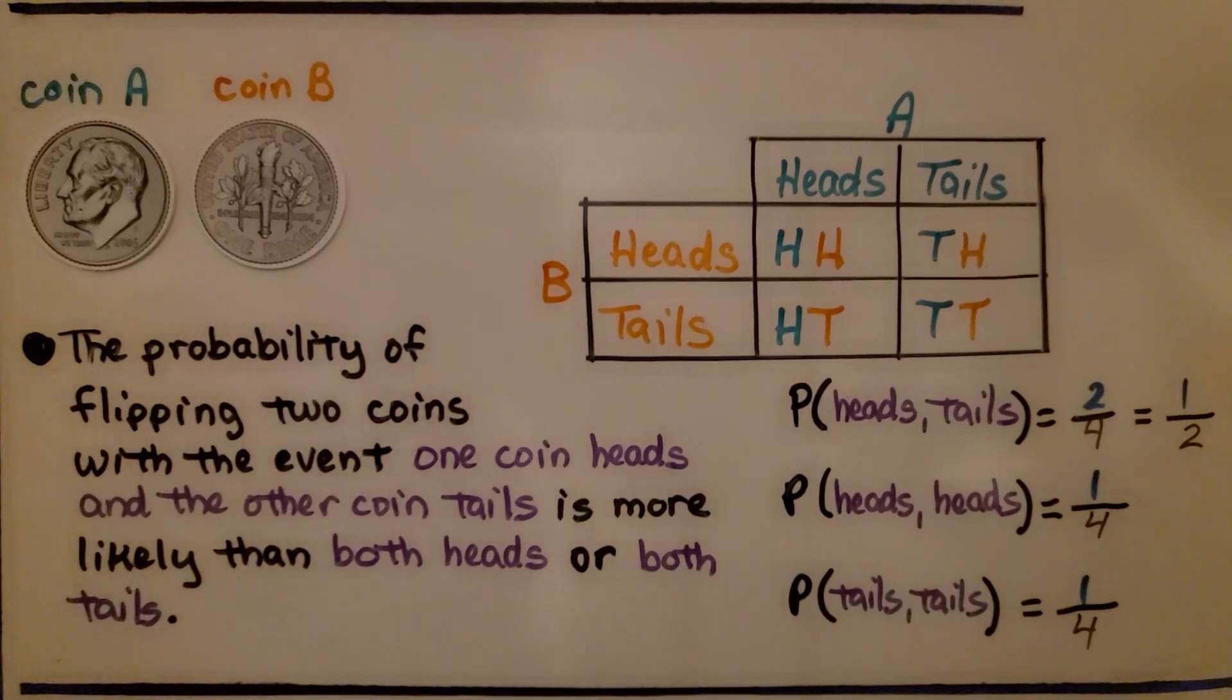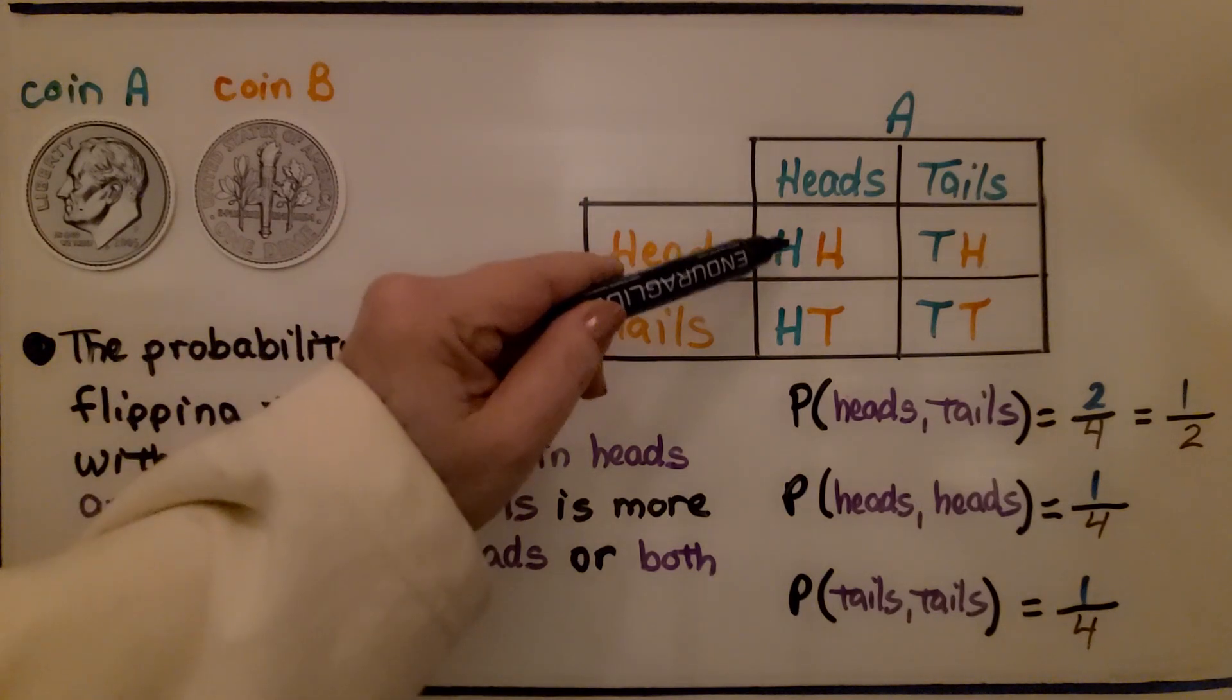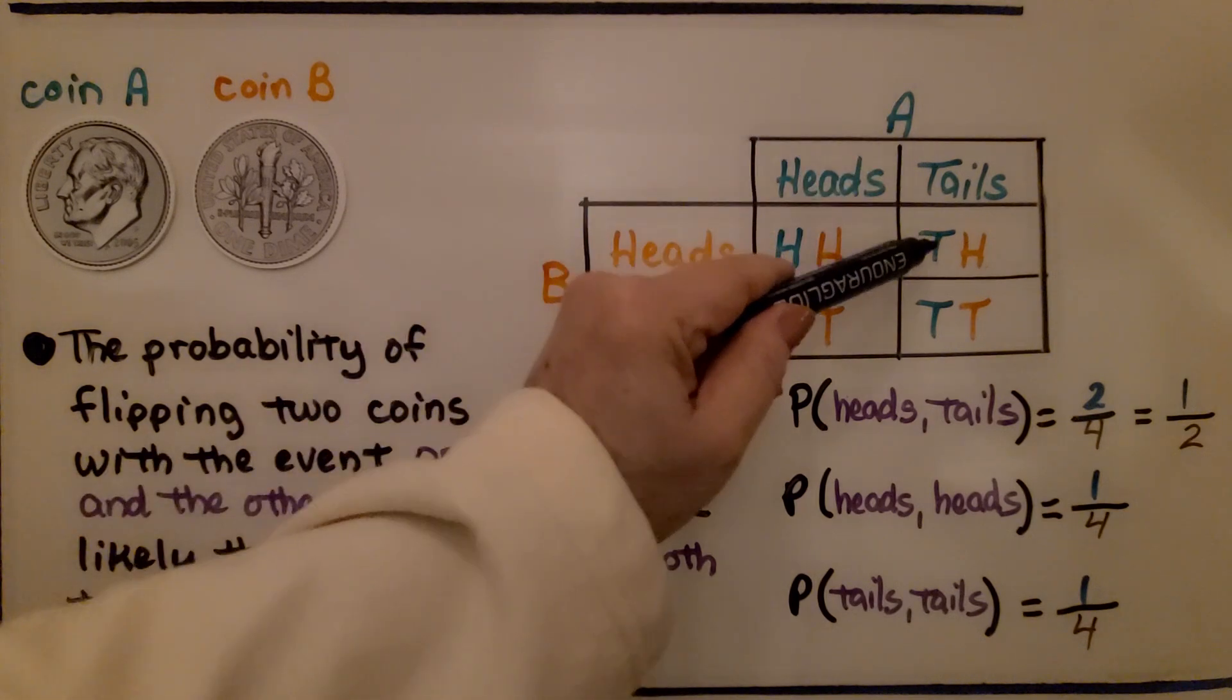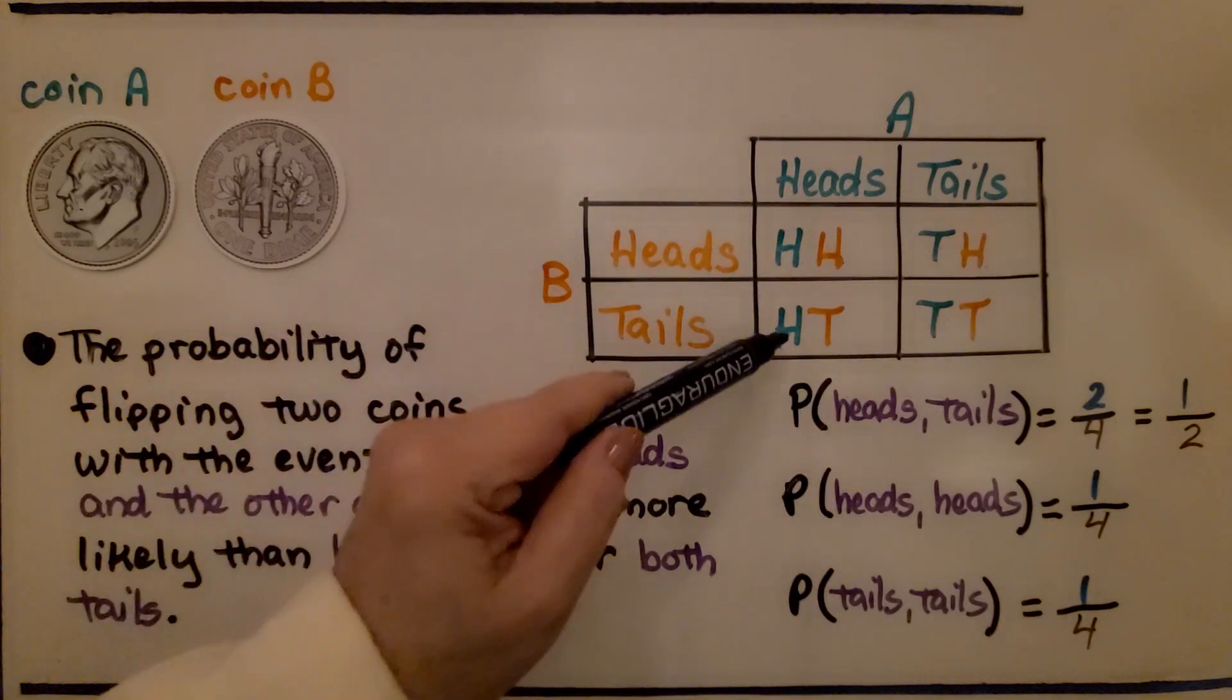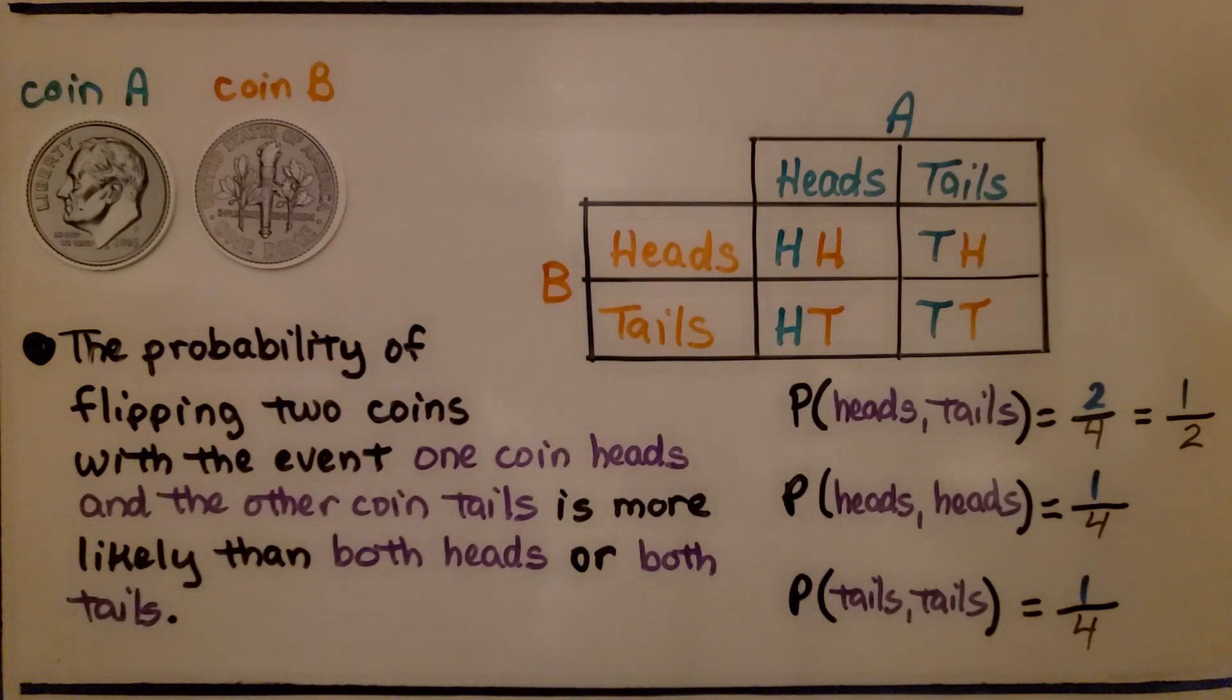Here we have a dime. We're going to call this coin A and coin B. The probability of flipping 2 coins with the event one coin heads and the other coin tails is more likely than both heads or both tails. We could flip coin A and get a heads and coin B and get a heads, or we could flip A tails and B heads.